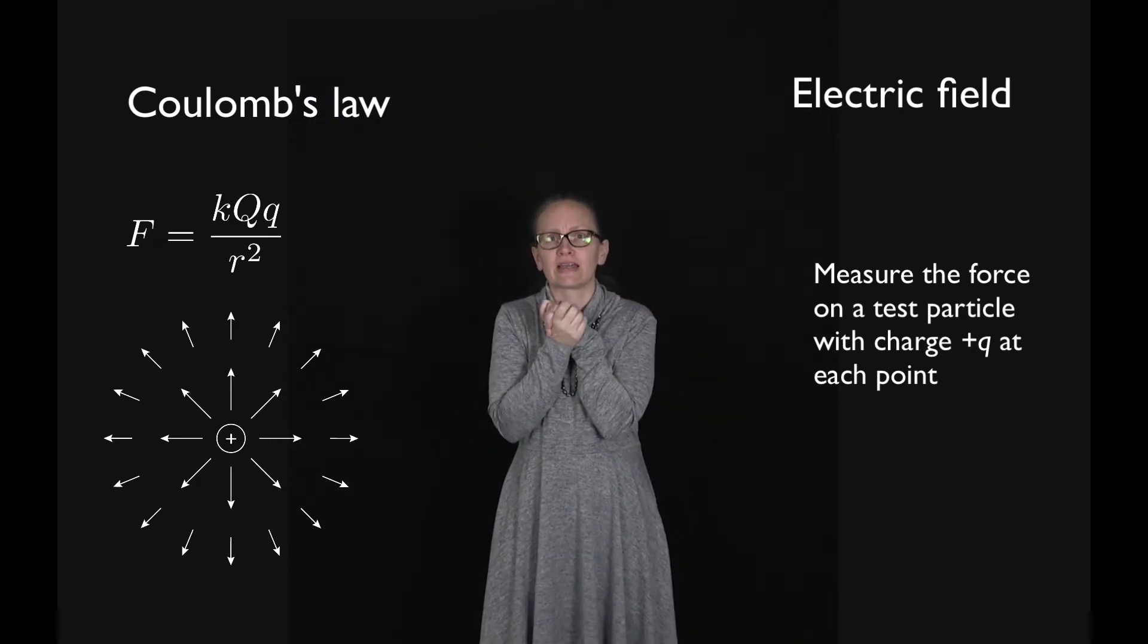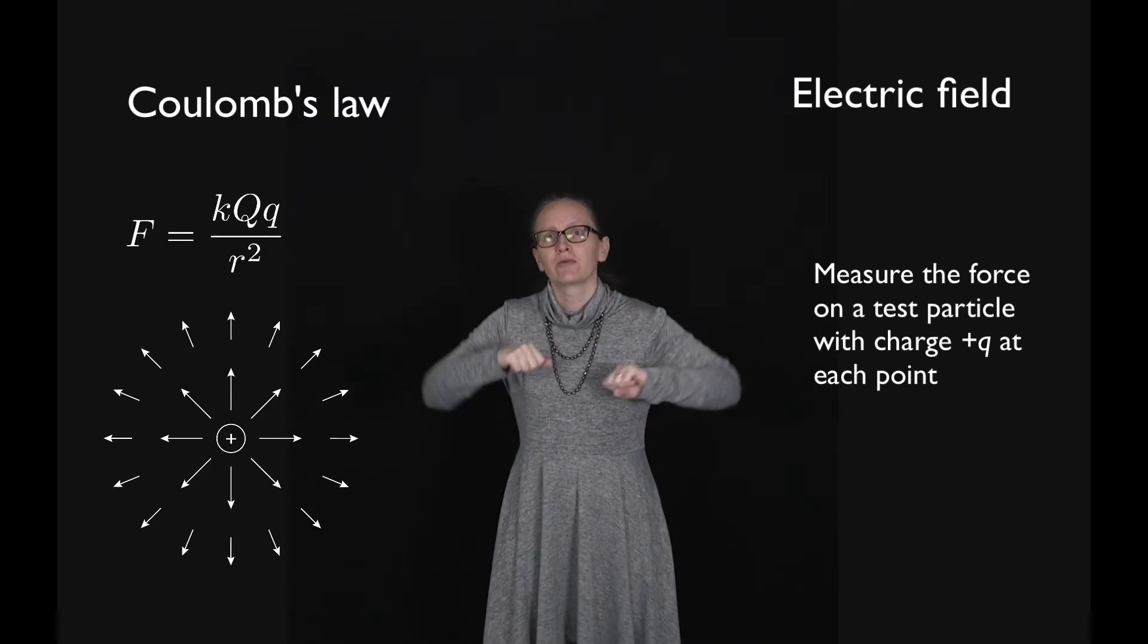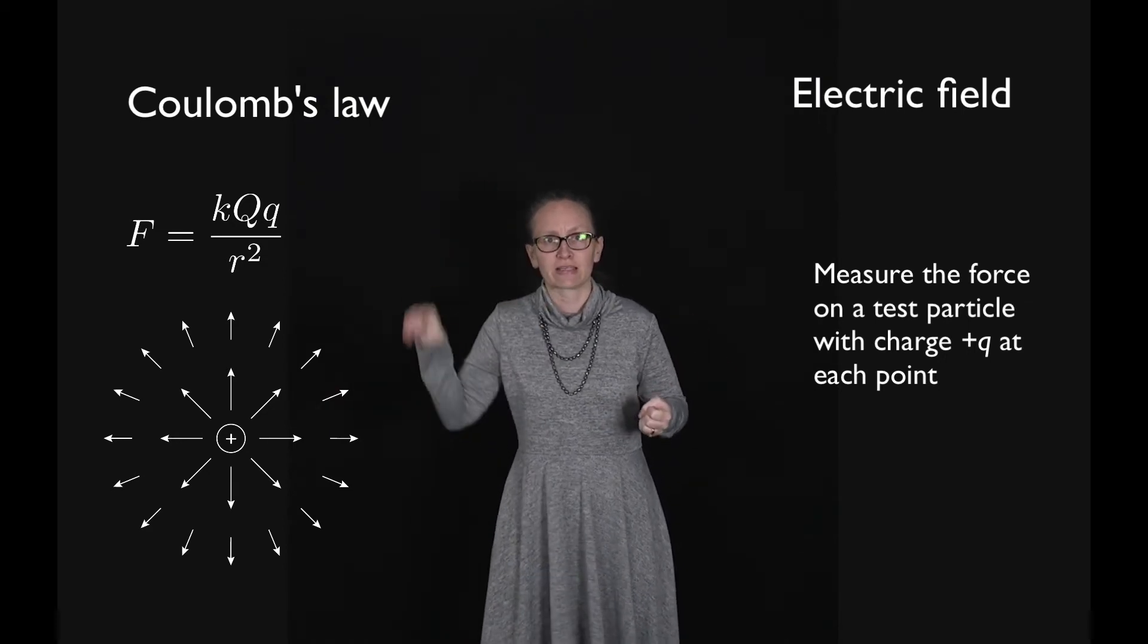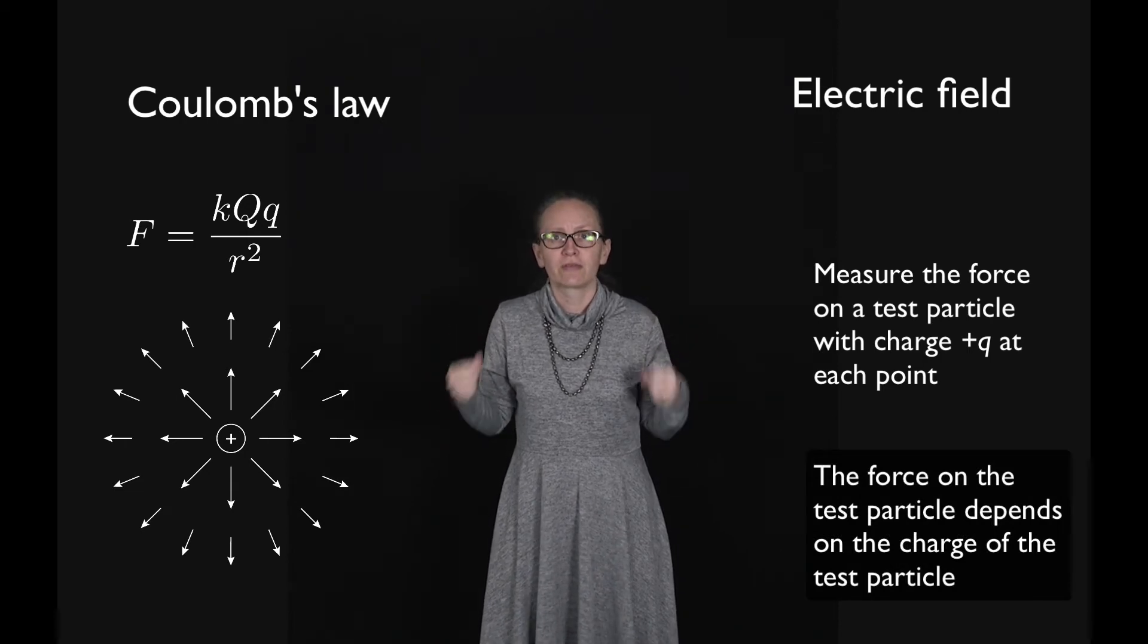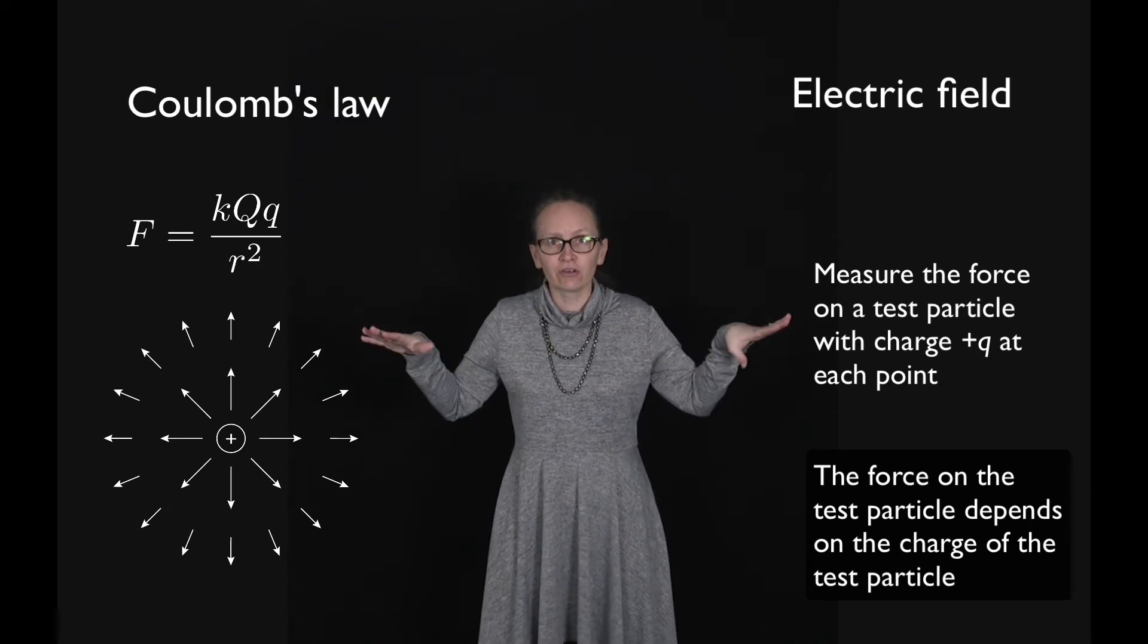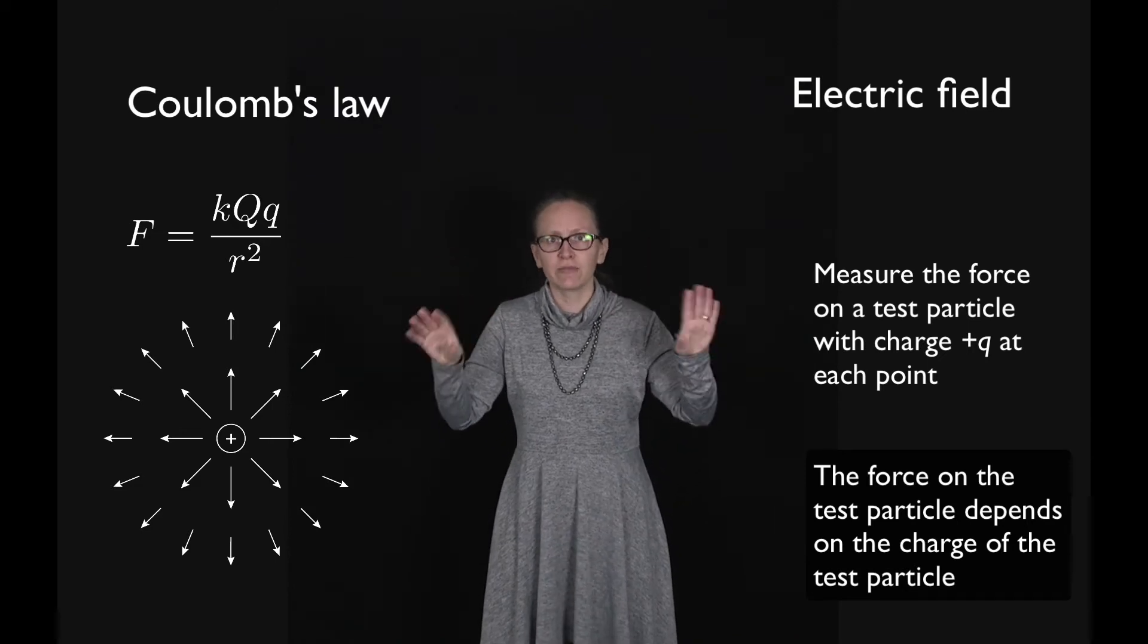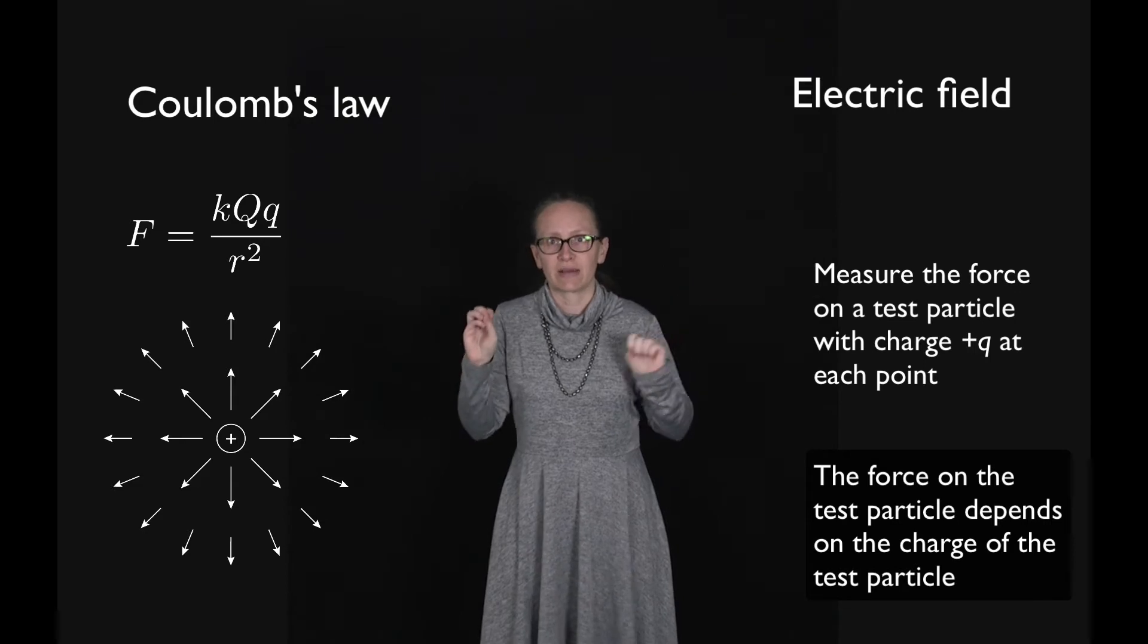However, now imagine that instead of having a test particle with charge Q, we replace it with a test particle with charge 2Q. In this case, if we place that test particle at each point in space, it's going to feel twice as much force because it has twice as much charge. However, the electric field obviously has not changed because we always choose a test particle which is really small, so we neglect any of the field created by the test particle itself.